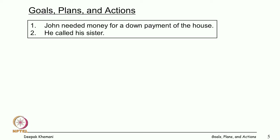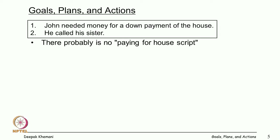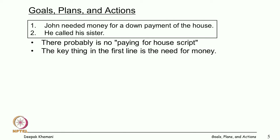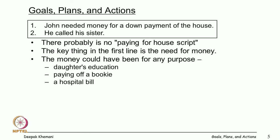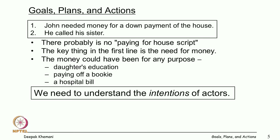Here is another story: John needed some money for a down payment on a house and he called his sister. What is the connection between these two? You do not expect a 'paying for the house' script. The key thing in the first line is the need for money — money could have been for any purpose: a daughter's education, paying off a bookie, or a hospital bill. So we need to understand the intentions of actors.